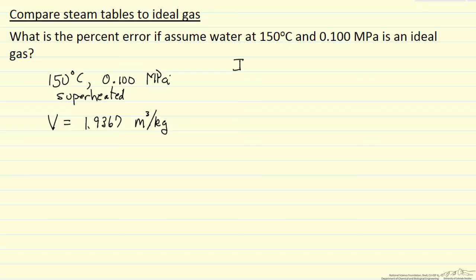If we take instead and assume we have an ideal gas, 150 degrees C and a tenth of a MPa, and we calculate the volume, let's call this volume ideal gas, and this is volume per mole, of course RT over P.